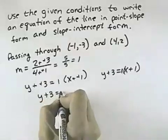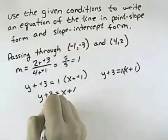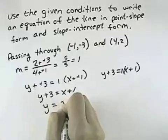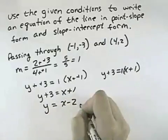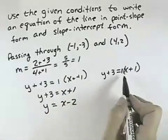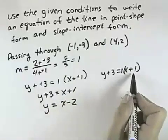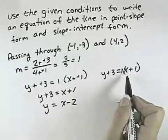So if I have y plus 3 equals x plus 1, I can subtract 3 from both sides to get y equals x minus 2. And so y equals x minus 2 would be my slope-intercept form. Well, y plus 3 times the quantity 1 times x plus 1 would be my point-slope form of the same line.